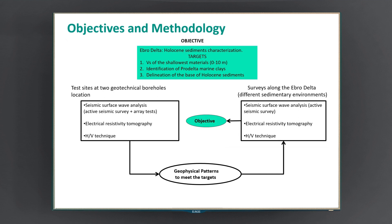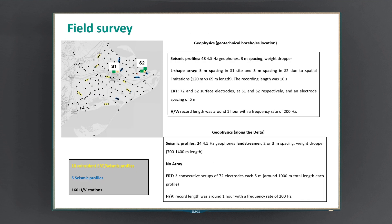What we will first do is evaluate the effectiveness of a suite of geophysical methods in a delta environment using test measurements. At these sites, we will integrate the geophysical results with geotechnical and geological information coming from two boreholes that sampled the whole Holocene sequence. From this analysis, we can identify geophysical patterns that will help us meet our targets in an extended survey along the Ebro Delta. In this map, we show the location of the test sites with the boreholes. S1 is located in the alluvial and S2 in the Delta Front environment.